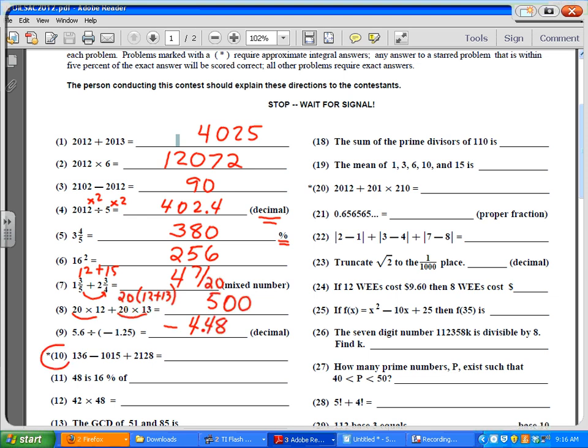Number 10 is an approximation. And on this one, we're going to have 2,128. So I have 2,100 minus 1,100. That's 1,100 plus another 100. I'm going to have 1,236. That's an approximation. And that's well within the range. So we'll pause it right here.